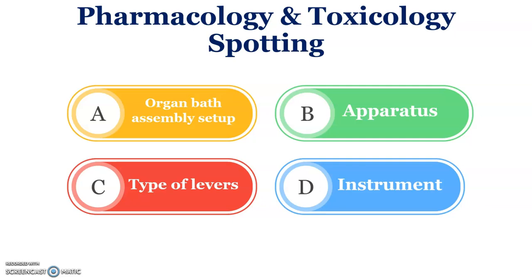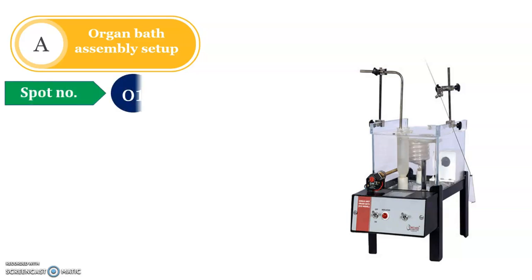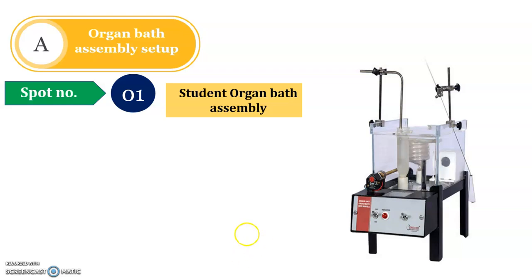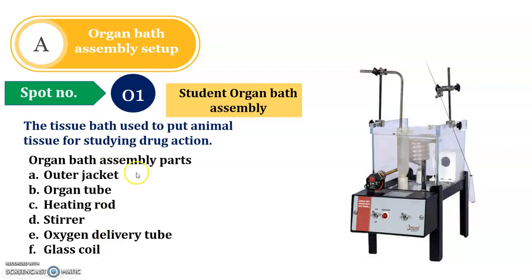As per these spots, four different parts, let us discuss one by one. This is spot number one — if you know the name, pause this video and write it in your notebook for practice. The name of spot number one is the Student Organ Bath. This bath is generally used to place animal tissue for studying drug action. Remember, in the exam, questions are asked about which experiments use this Student Organ Bath — experiments number 9, 10, 11, and 12 all use this organ bath.